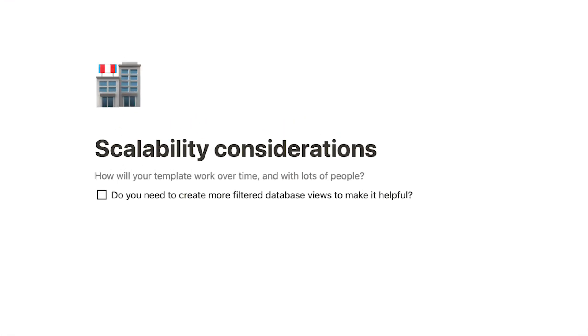Second, think about scalability. If your content is meant for teams or long-term use, consider how it'll look with lots and lots of content added to it. Do you need to create more filtered database views to make it helpful, or add toggles to hide some of the content? Testing your template with lots of content will help ensure it remains useful over time to those who duplicate it. Finally, make sure it has the basics — you probably don't want to share your actual banking information in your finance tracker. Double-check your spelling, grammar, and examples before you get ready to list.